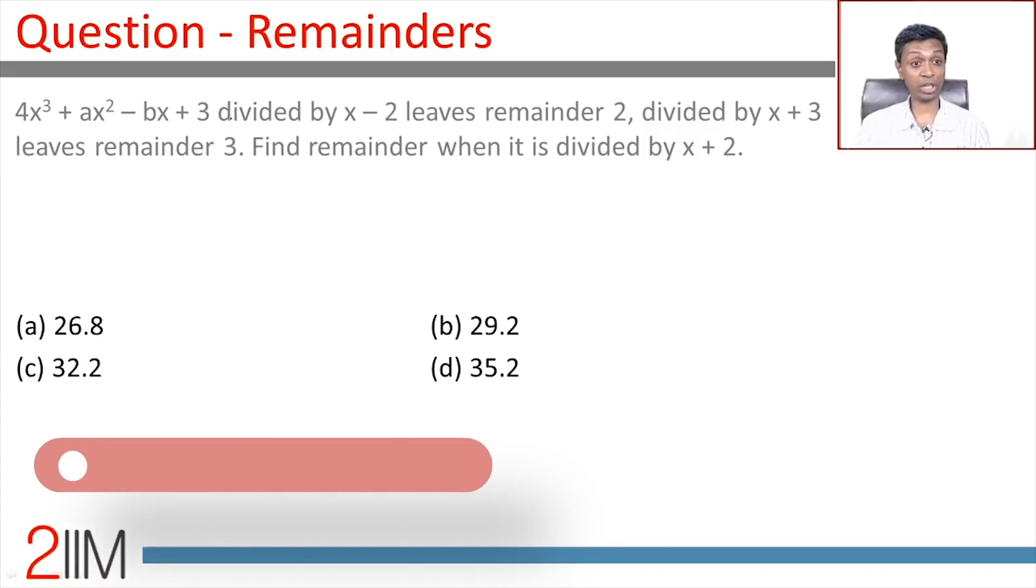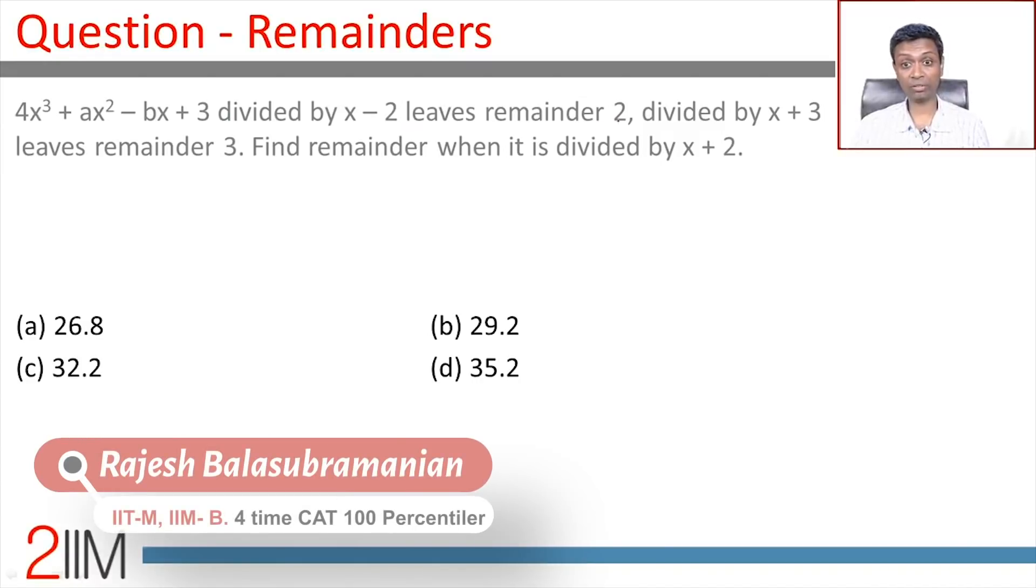4x³ + ax² - bx + 3 divided by x - 2 leaves remainder 2, divided by x + 3 leaves remainder 3. Find the remainder when it is divided by x + 2.